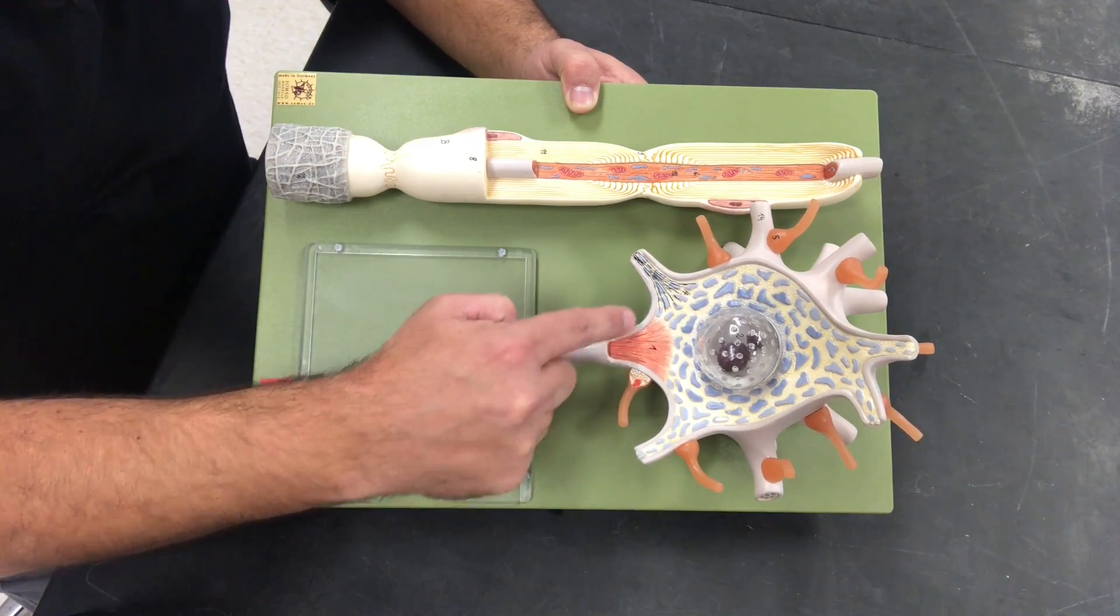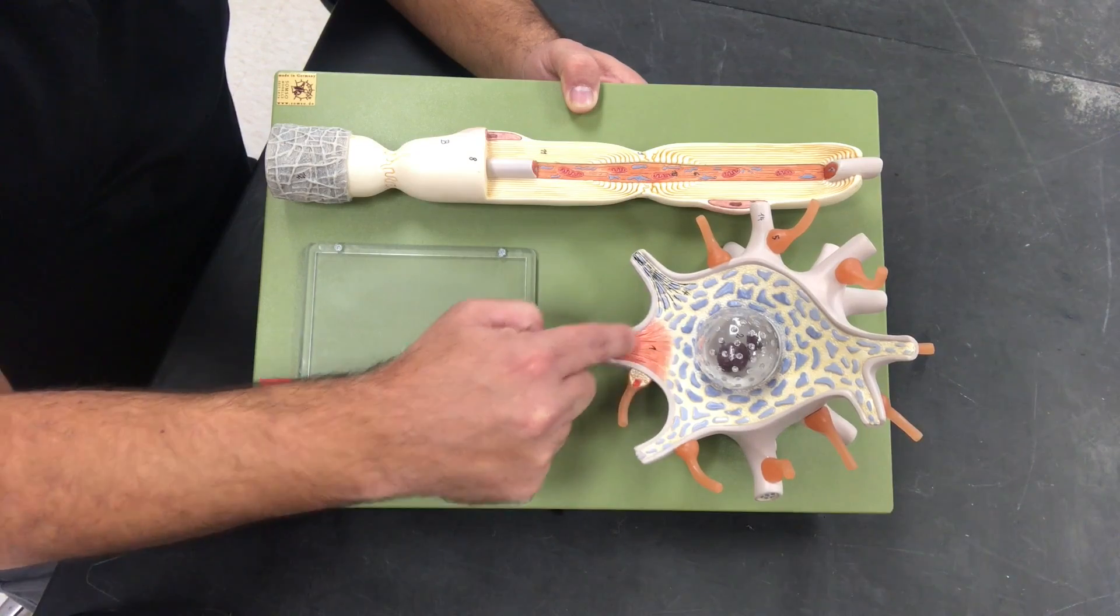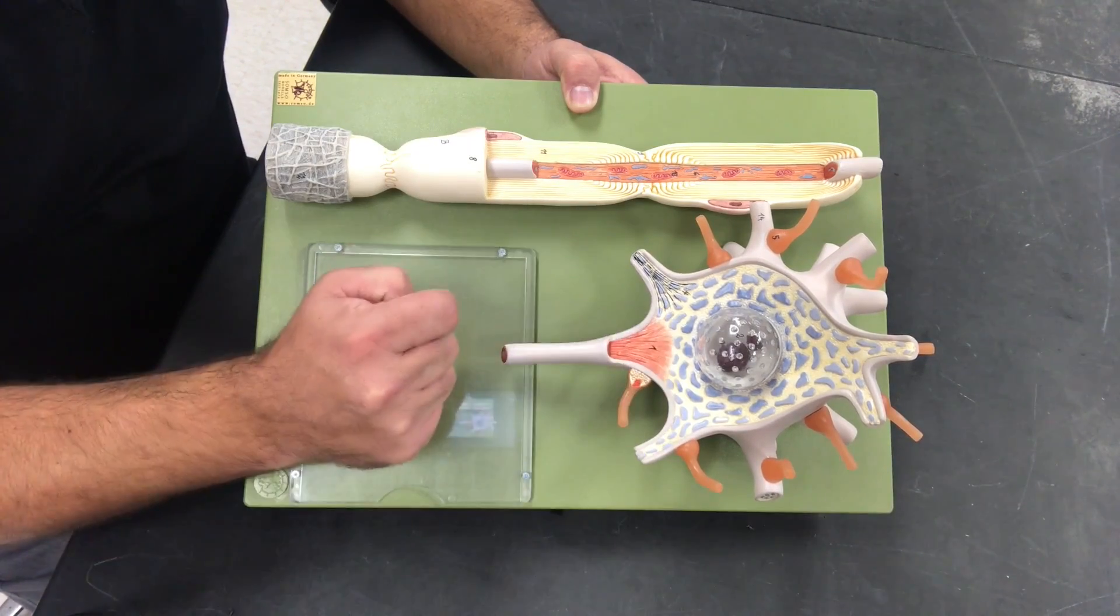We have a super important zone right here. This is known as our axon hillock. It is also our trigger zone.